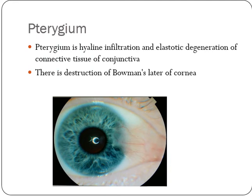Pterygium is a degenerative condition of the conjunctiva. As you all know, the conjunctiva is a transparent membrane overlying the sclera which ends at the limbus. It involves hyaline infiltration and elastotic degeneration of the connective tissue of the conjunctiva. There is fibrovascular proliferation — you can see fibrous tissue which is white in color and blood vessels encroaching onto the cornea.